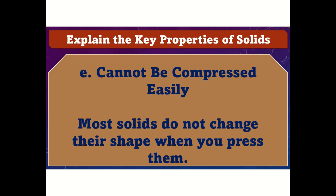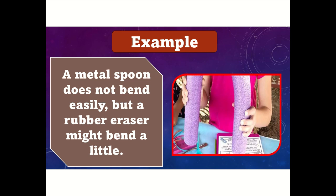E: Cannot be compressed easily. Most solids do not change their shape when you press them. For example, a metal spoon does not bend easily, but a rubber eraser might bend a little.